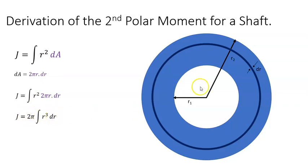Now this is a definite integral because we know the radius of the hollow part of the shaft, that's r1, and the radius of the outside of the shaft, r2. The radius varies between r1 out to r2. Think of this navy strip going from r1 all the way out to r2.